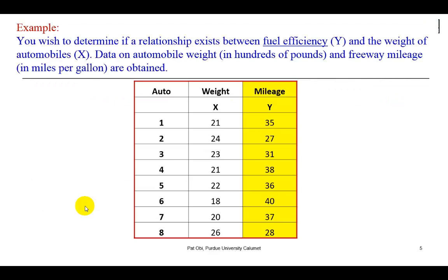So now, let's say you've settled on examining the fuel efficiency of cars, and you pursued that by obtaining a sample of eight vehicles. For each vehicle, you recorded the weight in hundreds of pounds and correspondingly identified the miles per gallon, the freeway miles per gallon. For vehicle number one, you find that it weighs 2,100 pounds and gives you 35 miles to the gallon. For vehicle number eight, which weighs 2,600 pounds, you find that it gives you 28 miles to the gallon.